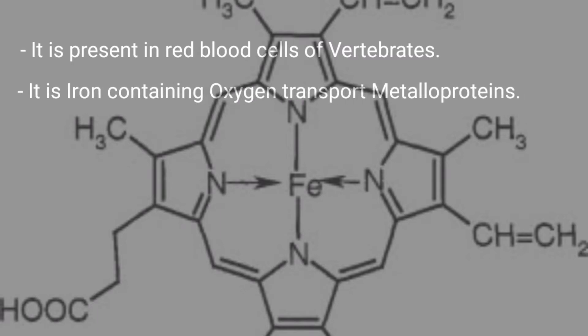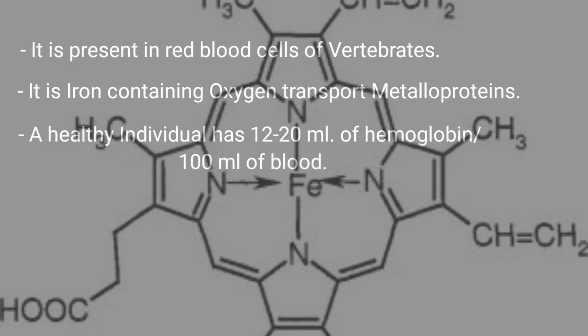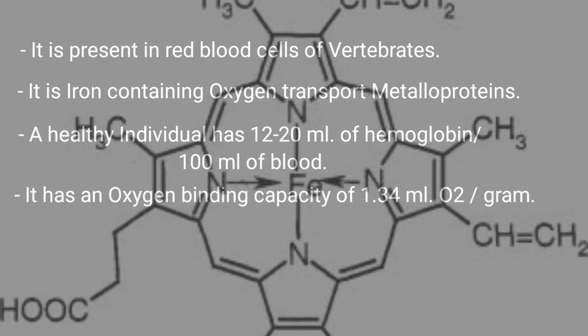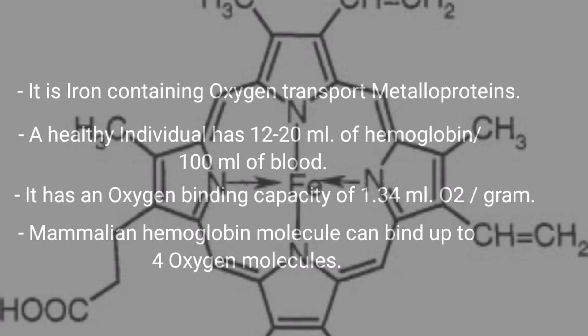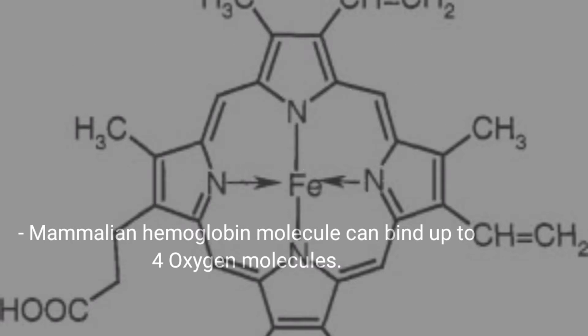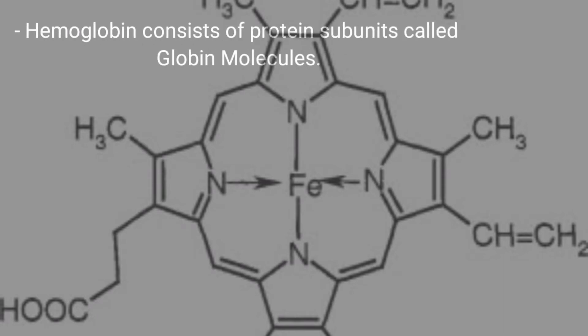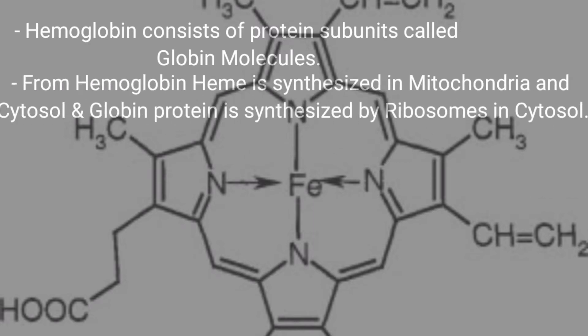The first respiratory pigment is hemoglobin. Hemoglobin is present in the red blood cells of vertebrates. It is an iron-containing oxygen transport metalloprotein. A healthy individual has 12 to 20 ml of hemoglobin per 100 ml of blood. It has an oxygen binding capacity of 1.34 ml of oxygen per gram. A mammalian hemoglobin molecule can bind up to four oxygen molecules.